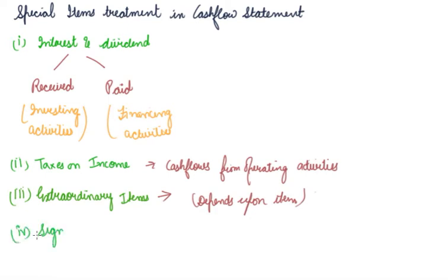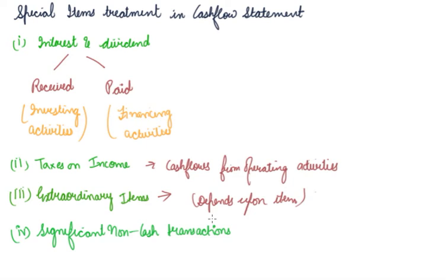The fourth item is significant non-cash transactions. Some investing and financing activities do not require the use of cash or cash equivalents, so they should be excluded from the cash flow statement. For example, the conversion of debentures into shares, or the acquisition of an asset by issuing debentures or shares — where instead of paying cash you issued shares — results in no inflow or outflow of cash and therefore will not be taken into the cash flow statement.